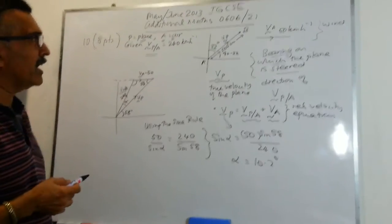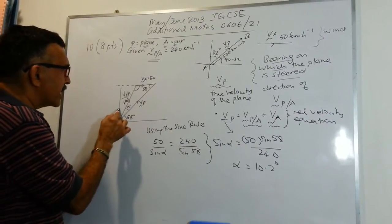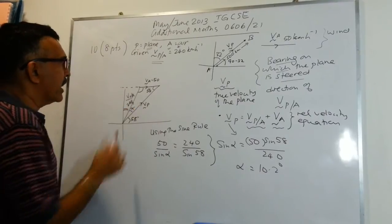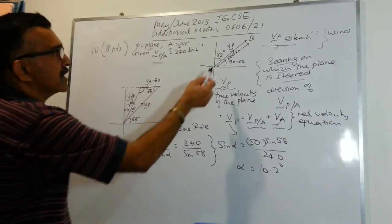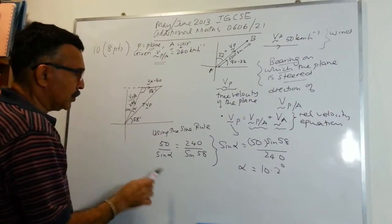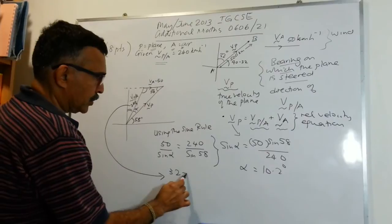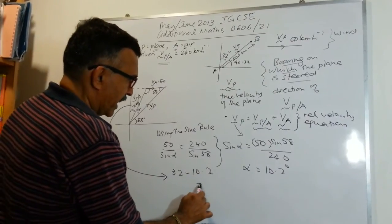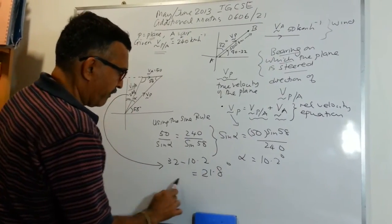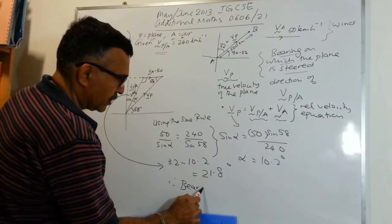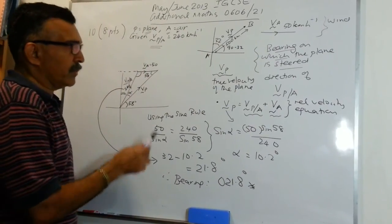Now we are looking for the bearing on which the plane is steered. We know the whole bearing angle is 32 degrees. So we find the steered bearing as 32 minus 10.2, which gives 21.8 degrees. Therefore, the bearing is 021.8 degrees, and we are done for the first part.